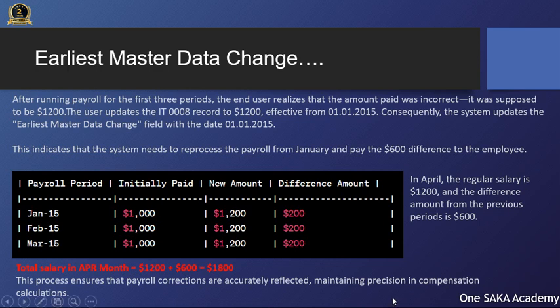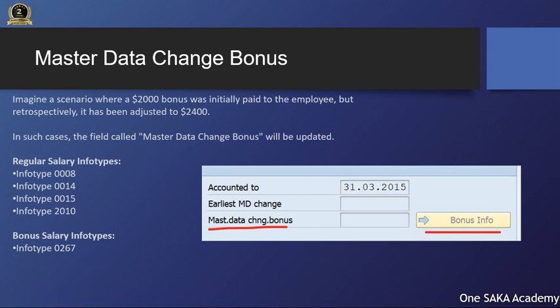Master Data Change Bonus: Imagine a scenario where a $2,000 bonus was initially paid to the employee, but retrospectively it has been adjusted to $2,400. In such cases, the field called 'Master Data Change Bonus' will be updated. Regular salary infotypes include infotype 0008, infotype 0014, and infotype 0015. Bonus salary infotypes include infotype 2010 and infotype 0267.